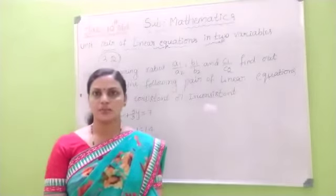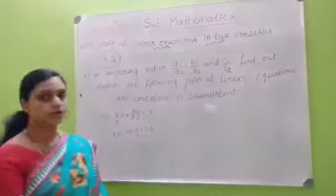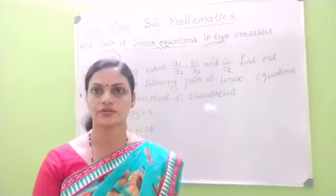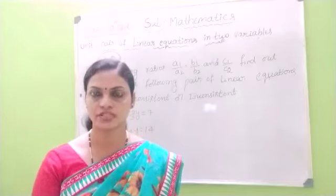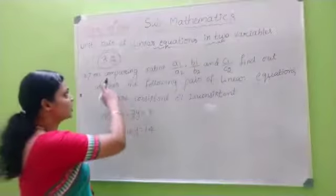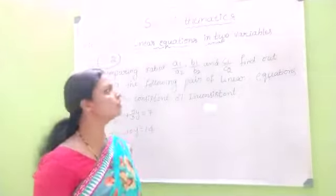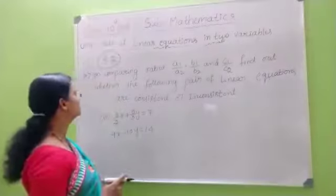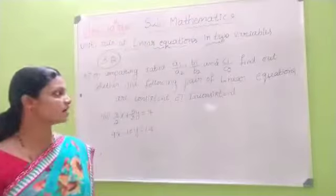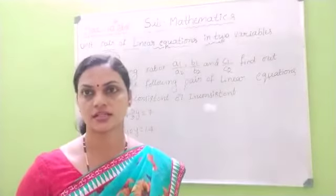In the exercise 3.2, third question — in the previous video I solved the first problem. So it will be a consistent pair. I am comparing the ratios A1 by A2, B1 by B2, C1 by C2. Find out whether the following pair of linear equations are consistent or inconsistent.